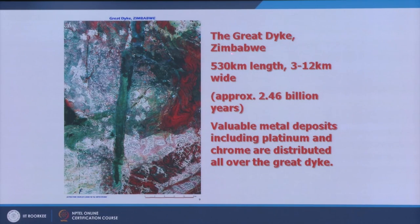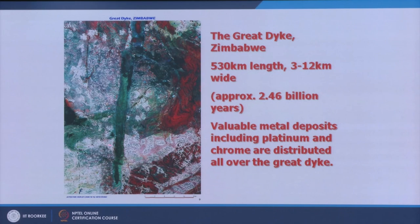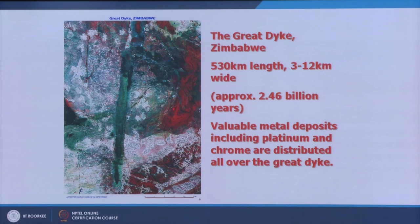The Great Dike of Zimbabwe is a very long dike, approximately 2.46 billion years old, associated with valuable metal deposits including platinum and chromium. Using satellite imagery, unexplored areas containing such features can be identified, field samples collected, and valuable metal deposits confirmed — as was done here.